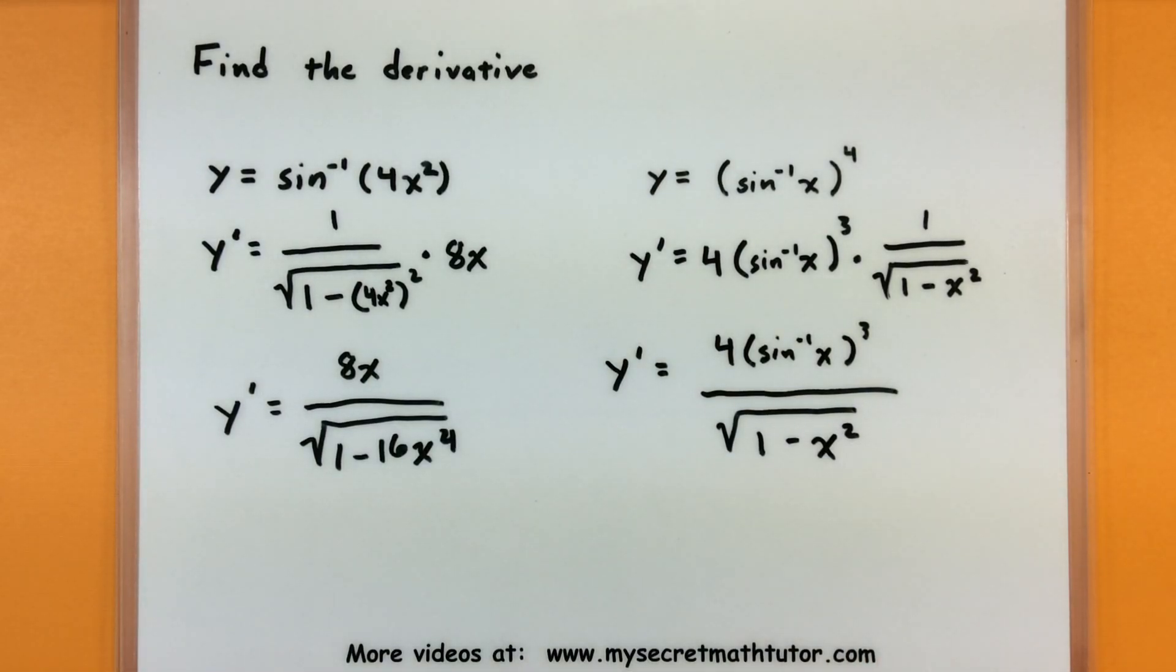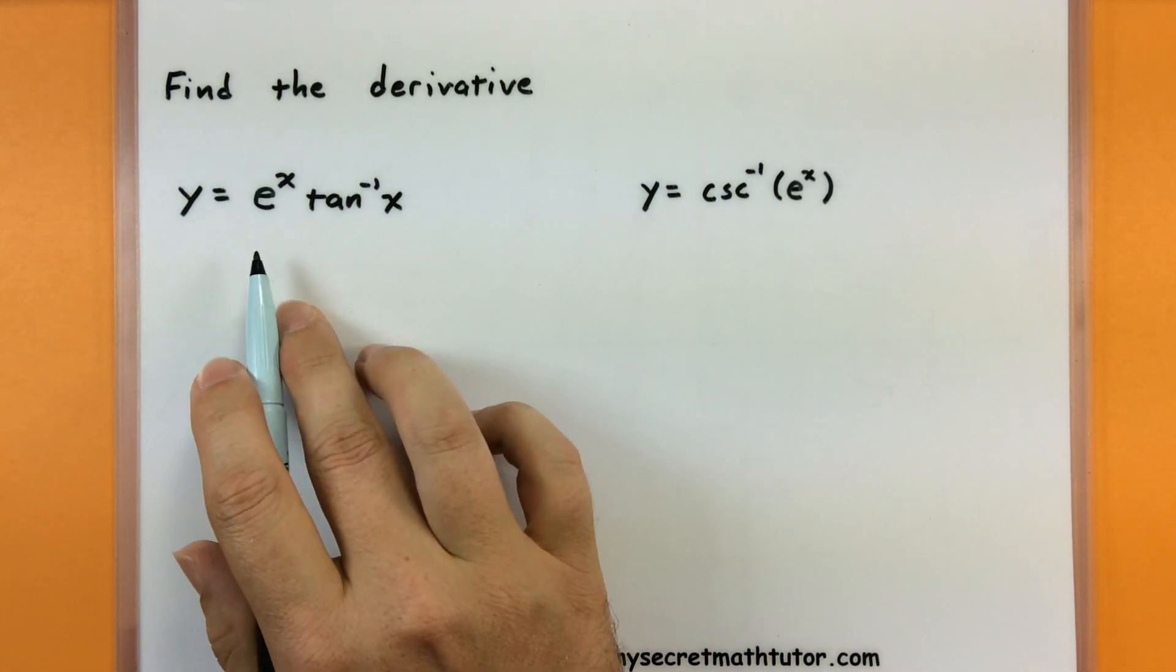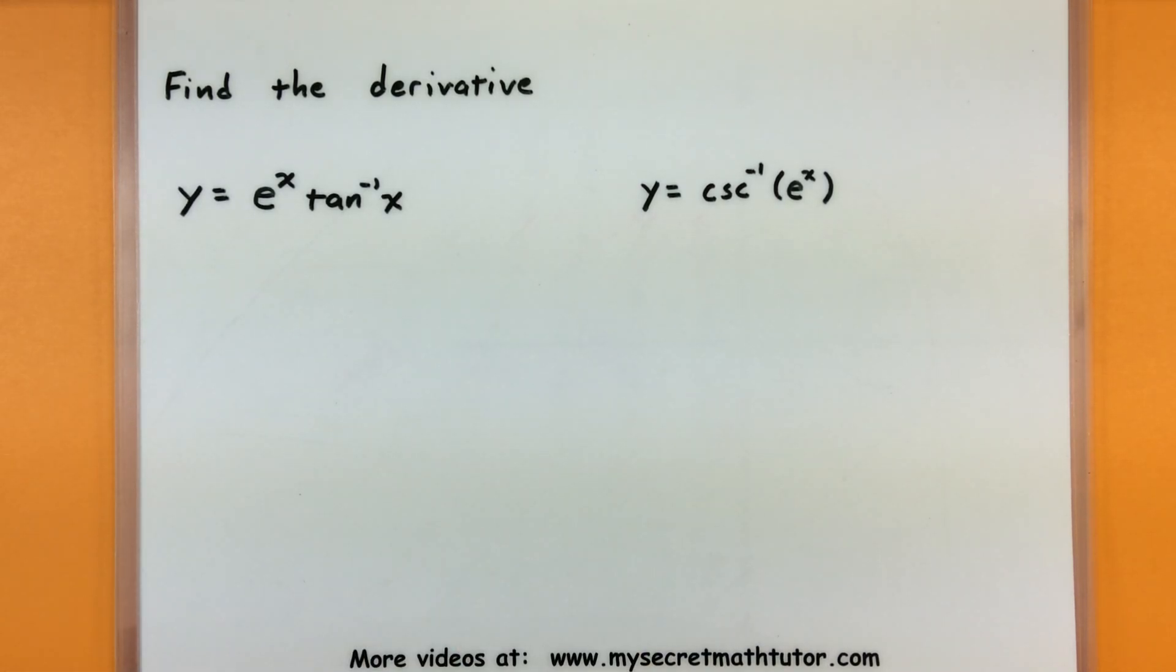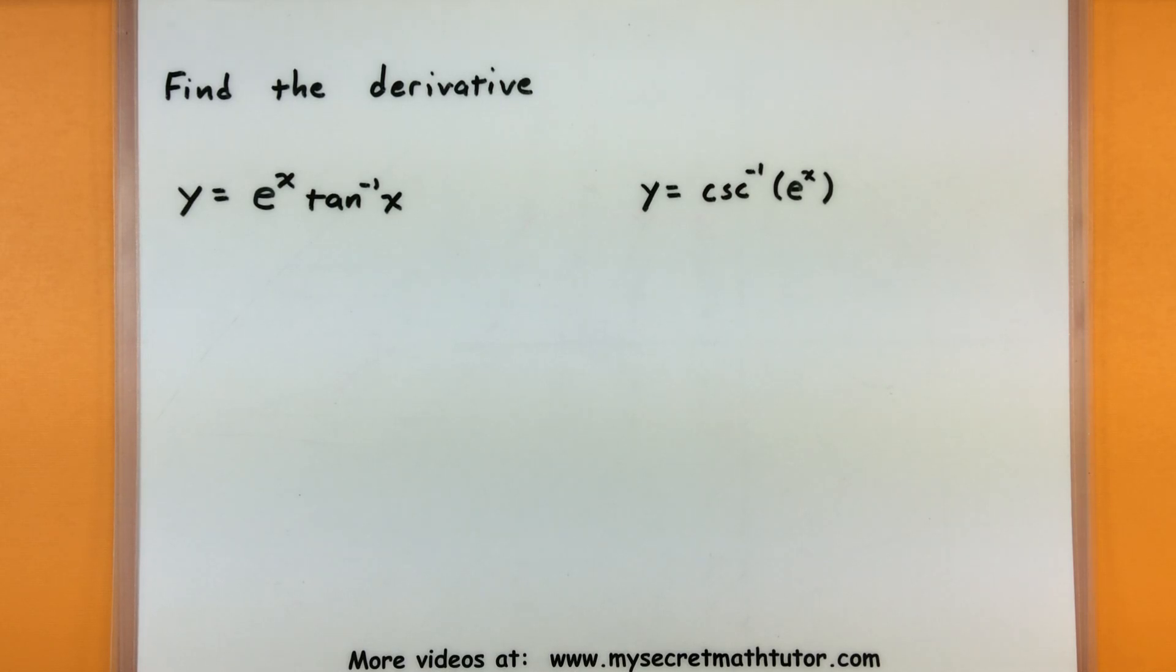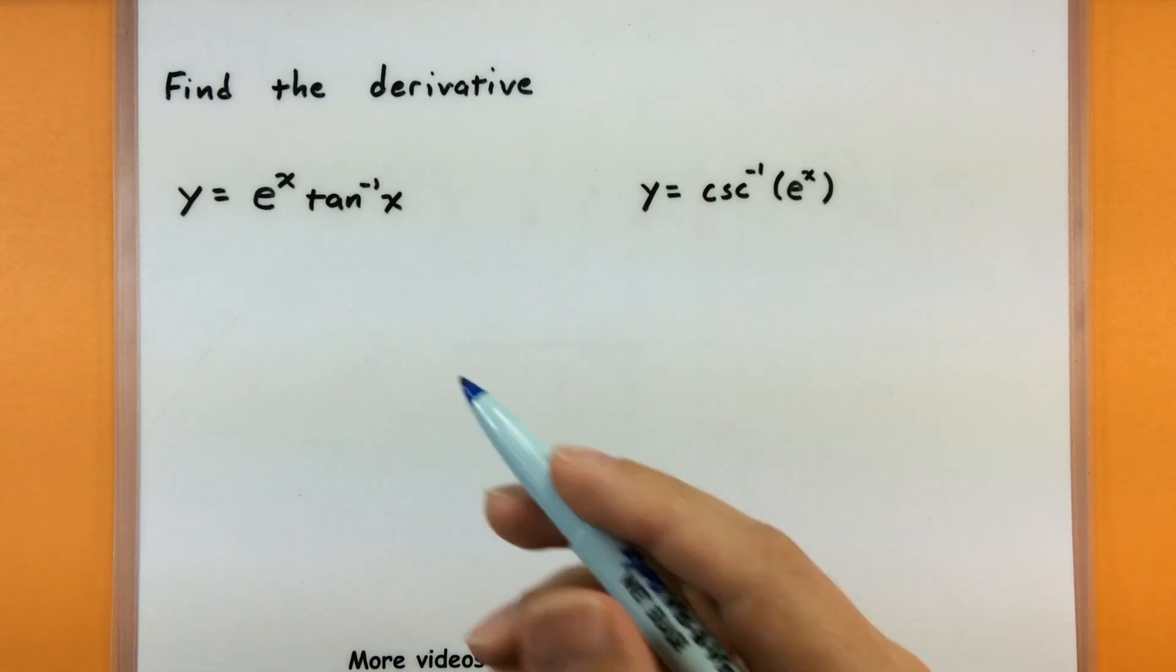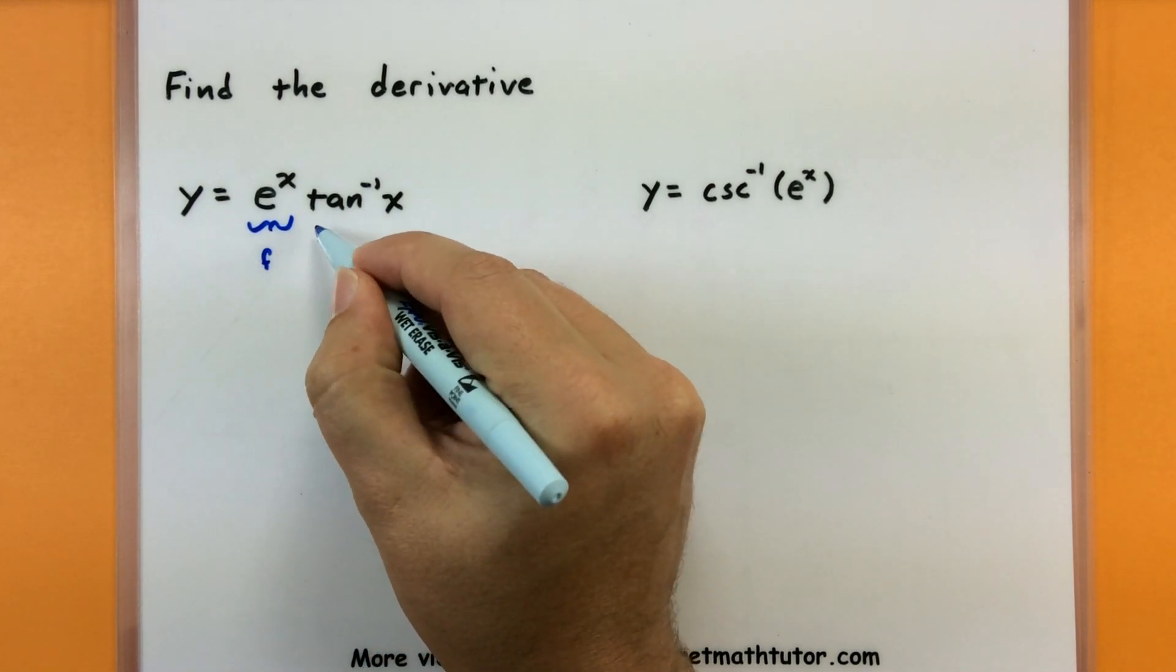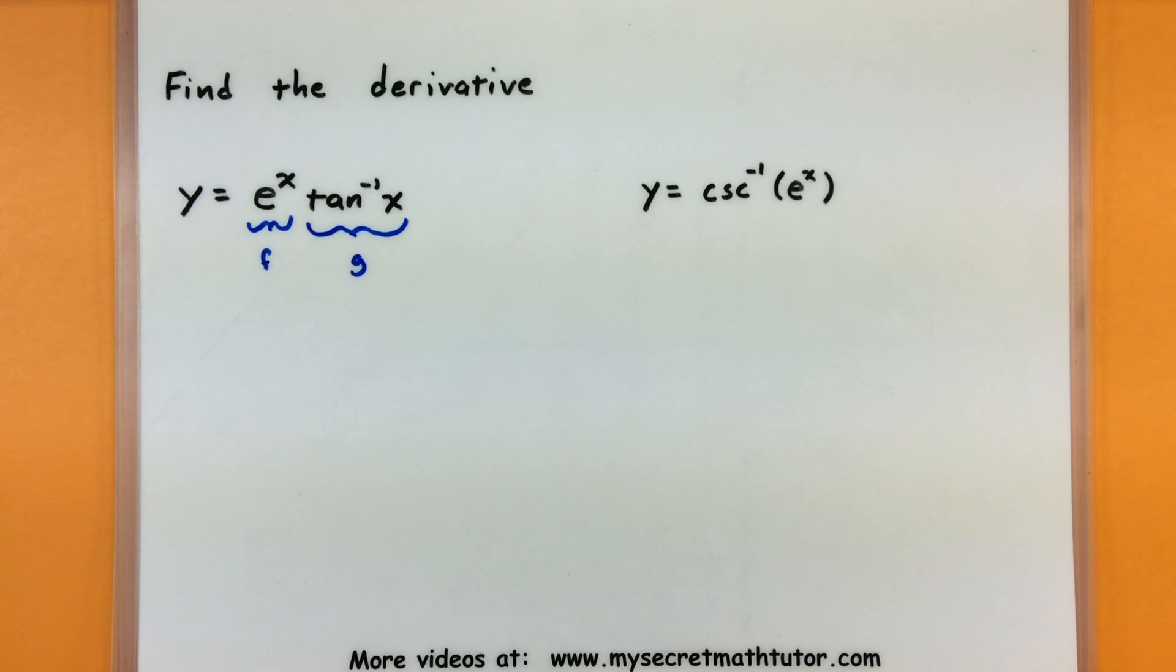All right, so let's do a couple more examples just so we can get a little bit better at doing this. Let's go ahead and throw in a few more of those inverse trigonometric rules, so we can see what those look like. All right, this next one, we'll go ahead and take care of the derivative of e to the x multiplied by inverse tangent. Now in order to take care of this guy, I really want to point out that we're going to have to use a product rule. So here we have one function, let's call this f. And really this guy over here is the second function, I'll call that g.